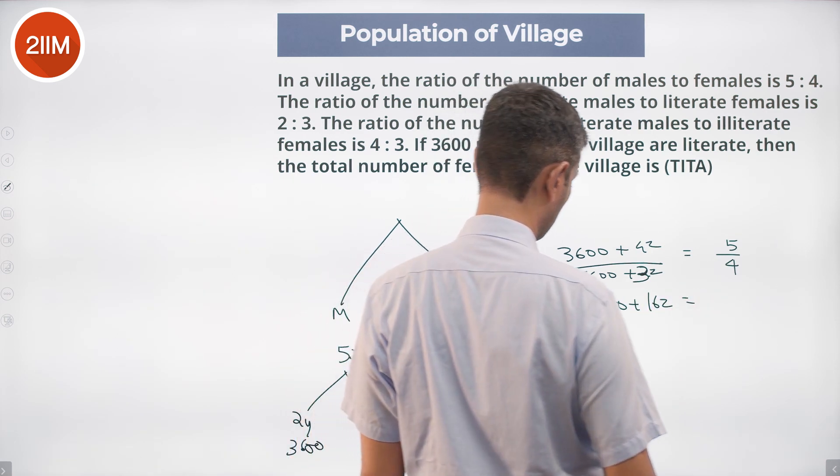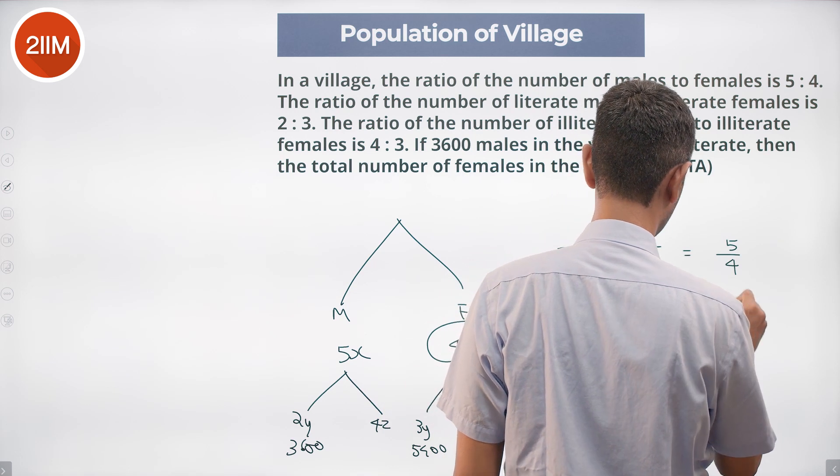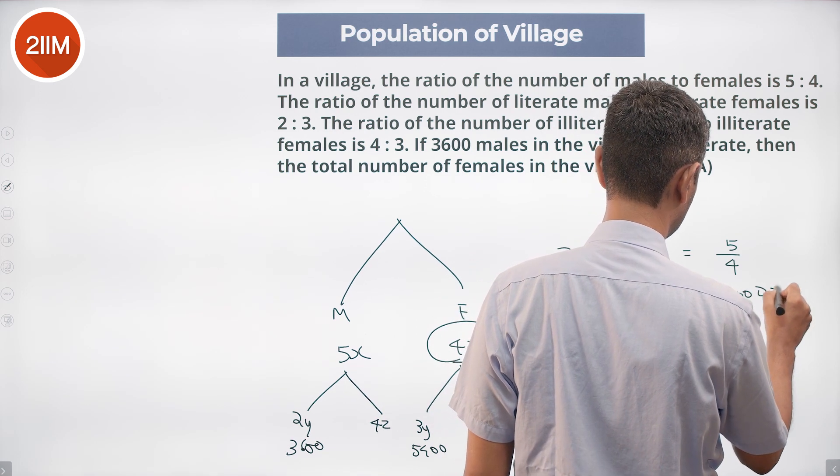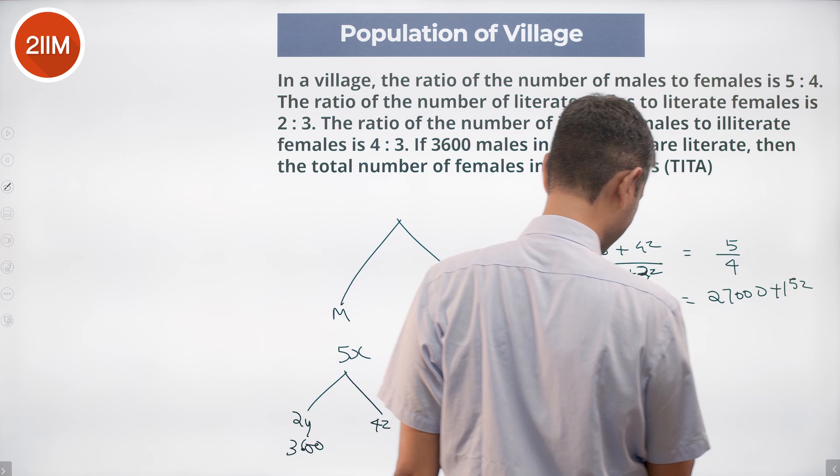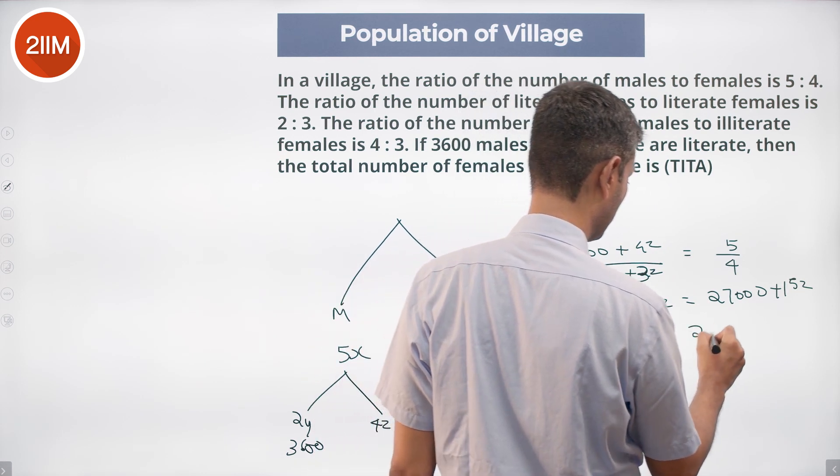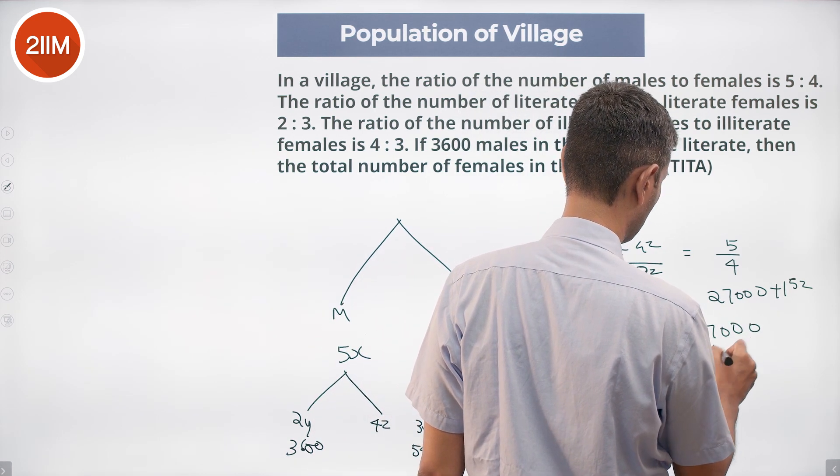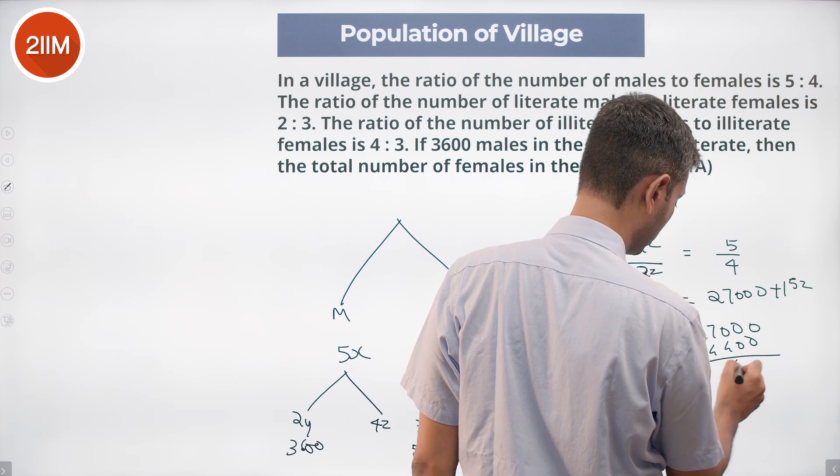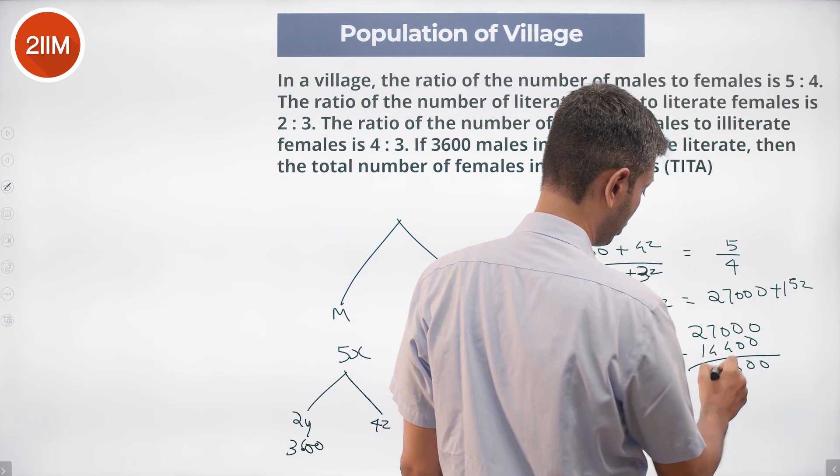Z equals 27000 minus 14400. This is 600, 6 minus 4 is 2, so 12600 is Z.